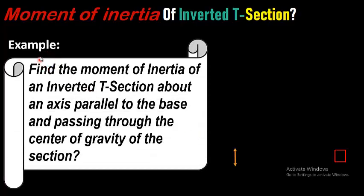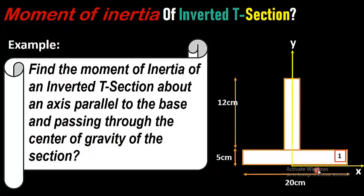To make it easier for you, let's have an example. Find the moment of inertia of an inverted T section about an axis parallel to the base and passing through the center of gravity of the section. The dimensions of the figure are given as: the base of the inverted T section is 20 cm, the width of this section is 5 cm, and the remaining height of the T section is 12 cm.